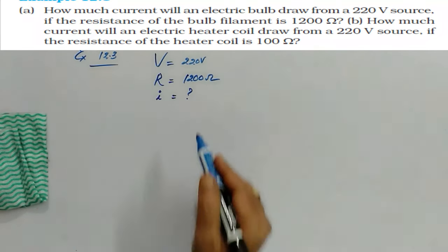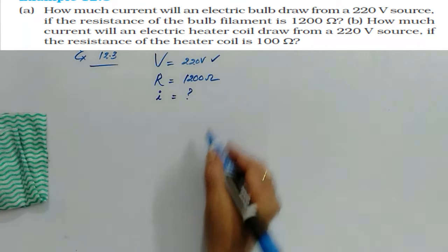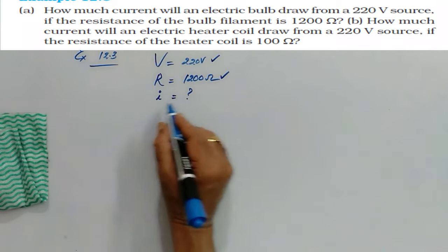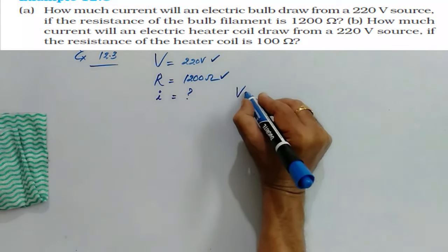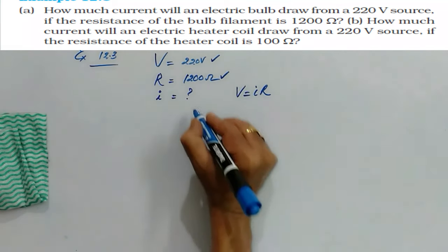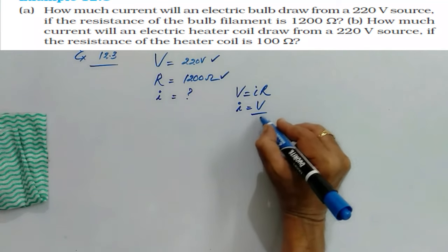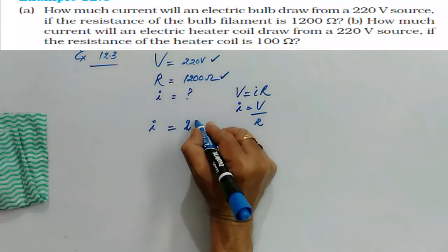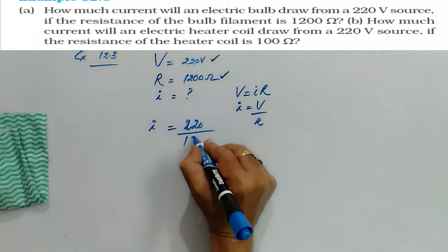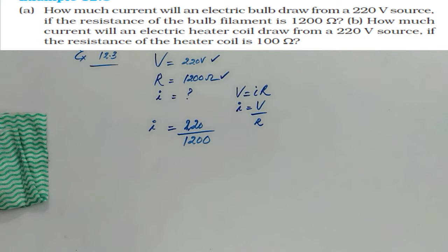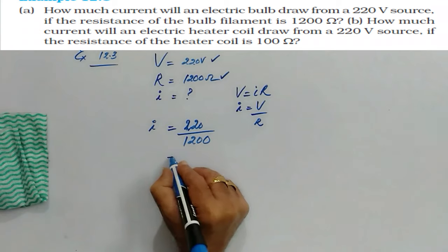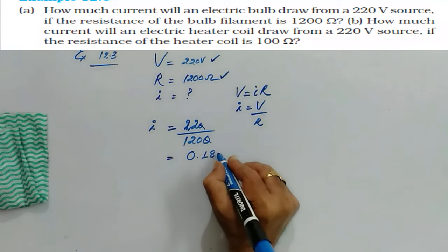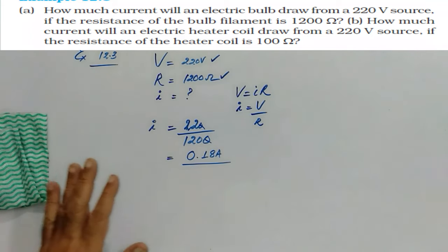There are two parts in this problem. First, it is given 220 V, the bulb resistance is 1200 ohms, and the current passing through the filament is asked. We know that according to Ohm's law, V is equal to I times R. Therefore I is equal to V by R. That is 220 divided by 1200. After simplifying, you will get an answer as 0.18 ampere. So this is the first part.